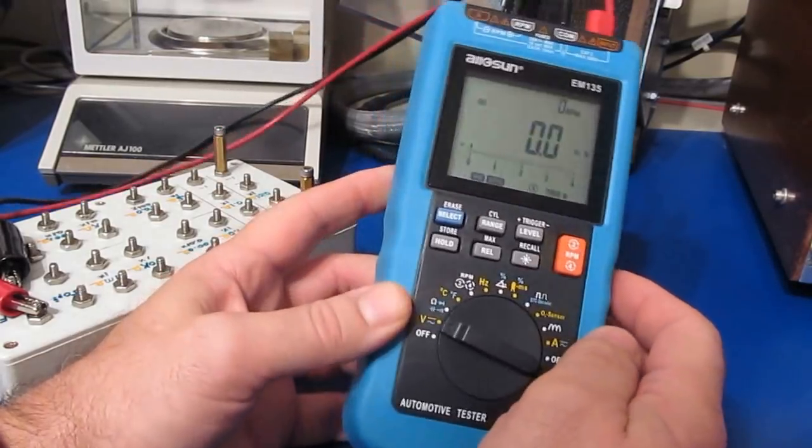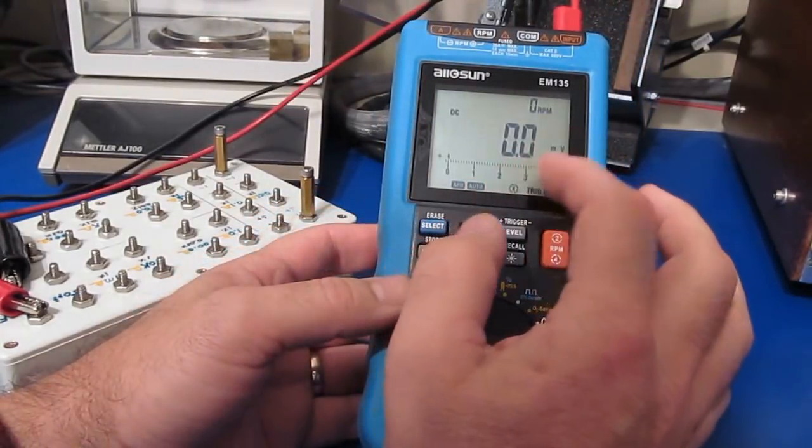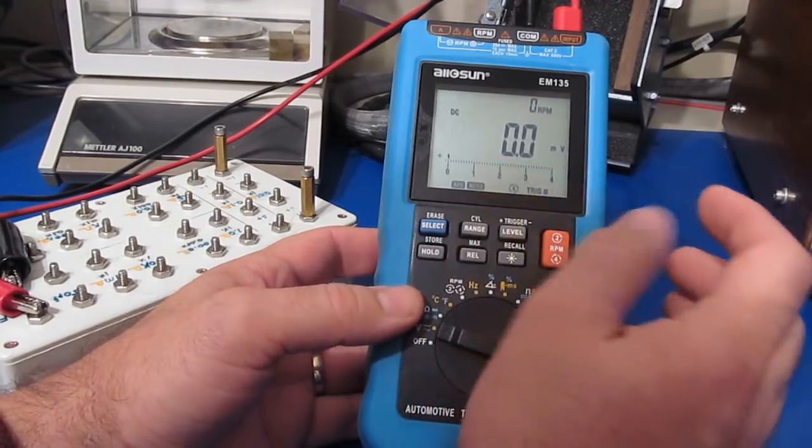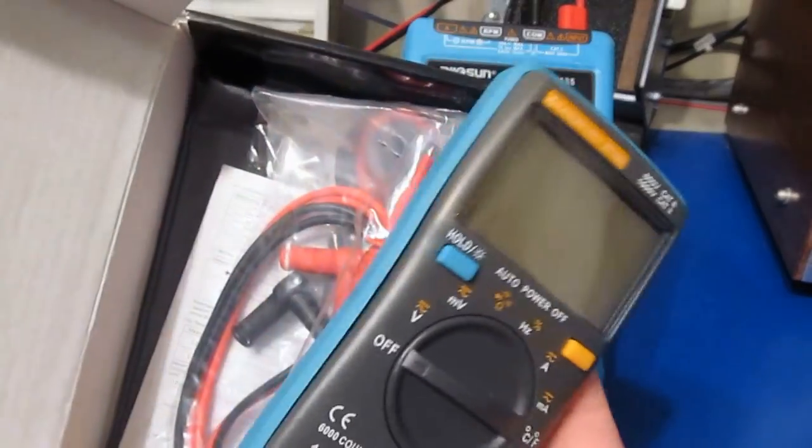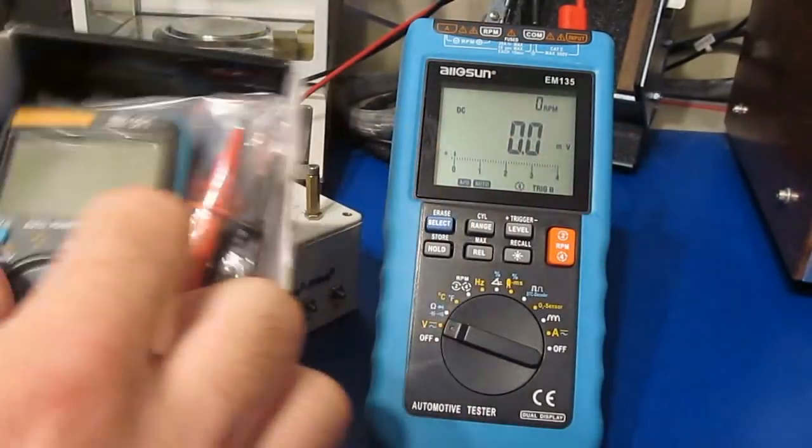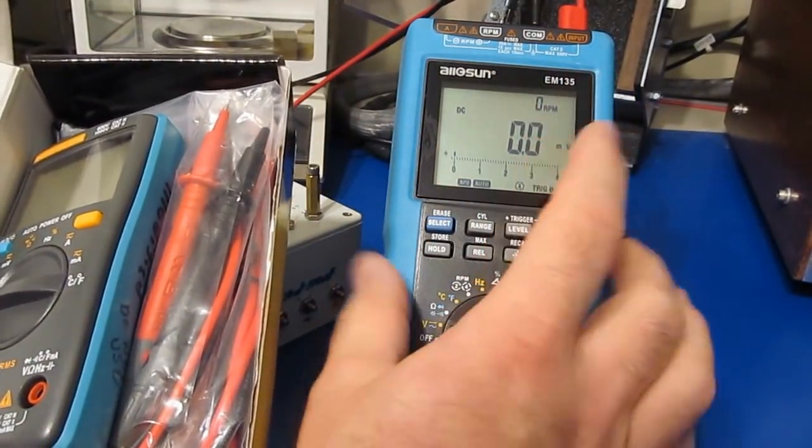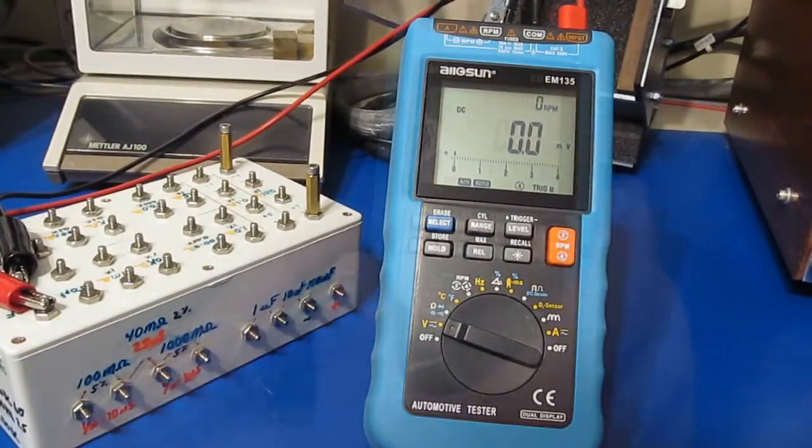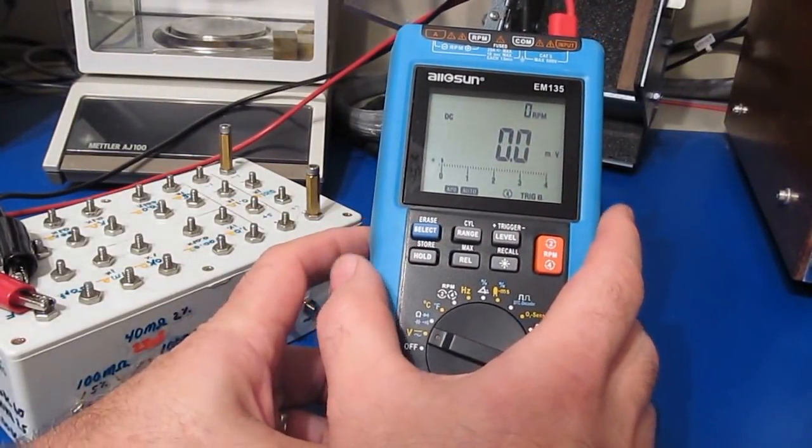The EM-135 is back together after modifications. The same modifications made to the Kasuntas ET-102 were applied to this meter's front end. This meter had a different configuration with two PTCs in series.